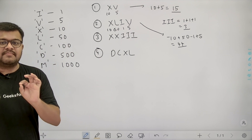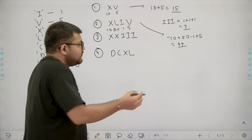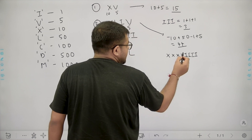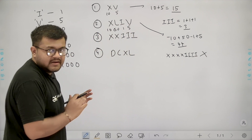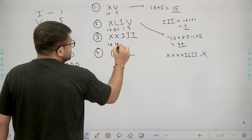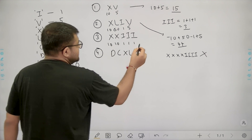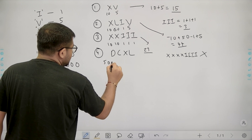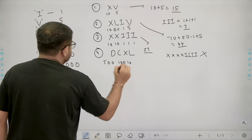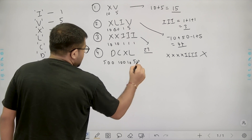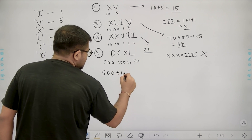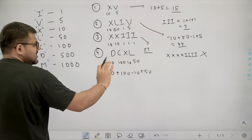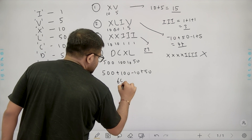No same character is repeated more than three times consecutively, so 44 is not represented as XXXXIIII. Instead it is represented as XLIV. For XXIII: X is 10, X is 10, I is 1, I is 1, I is 1 — that represents 23. For the last example DCXL: D is 500, C is 100, X is 10, L is 50. Since 500 is greater than 100 we add 500; 100 is greater than 10 so we add 100; 10 is less than 50 so we subtract 10; 50 is the last value so we add it. That gives 650 minus 10, which equals 640.